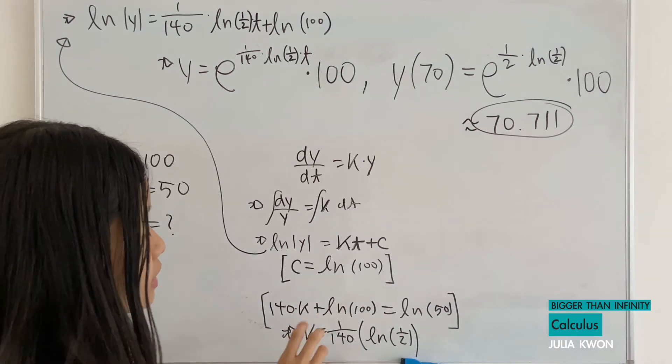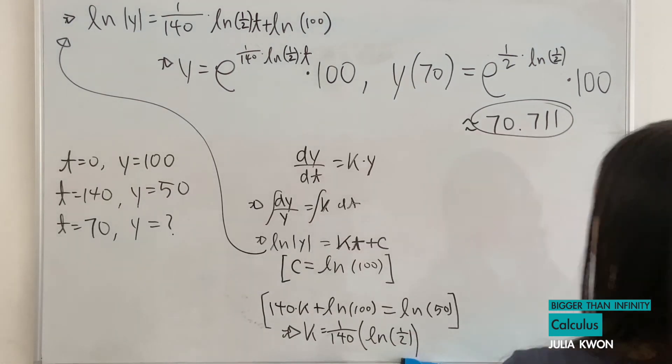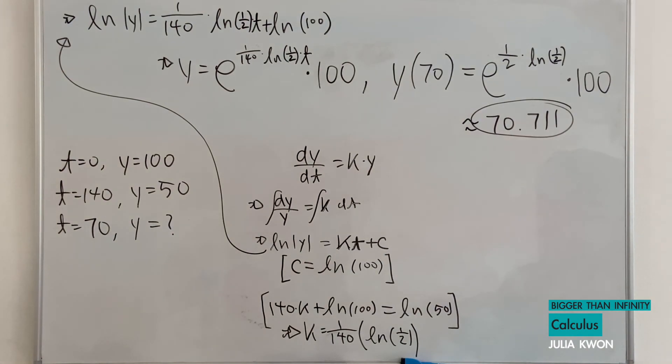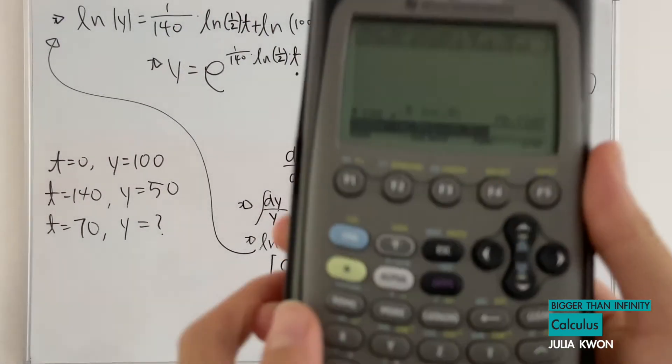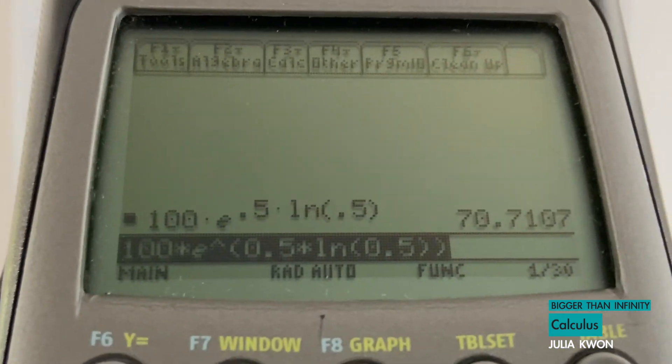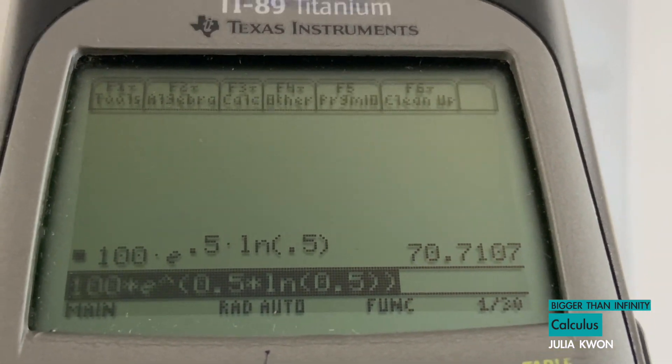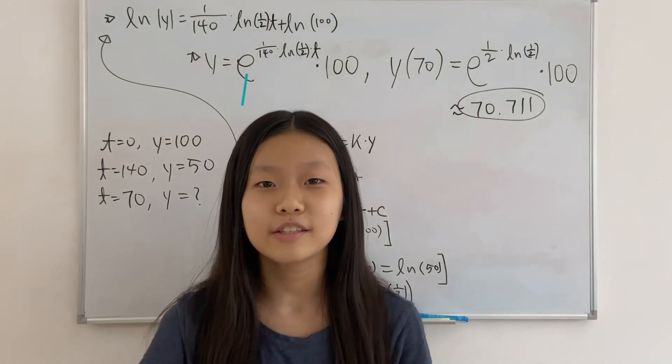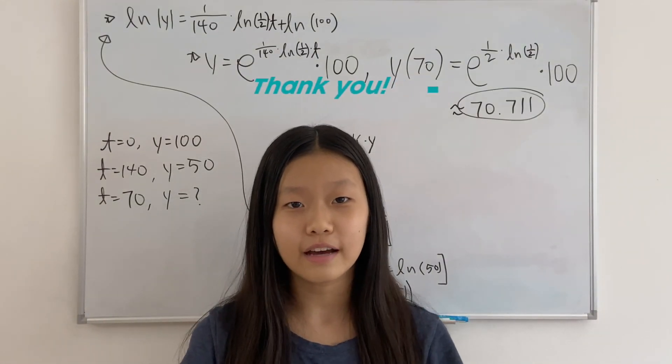So that would be our answer, 70.71 grams. That's how much we would have left. As you can see in my calculator, I calculated it and I got 70.7107. So thank you so much for watching everyone and have a great day.